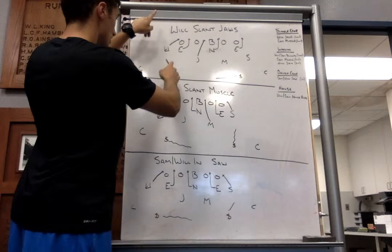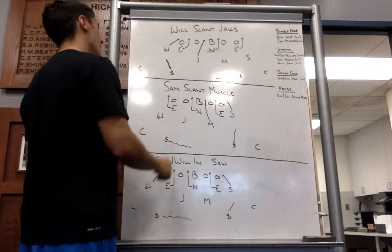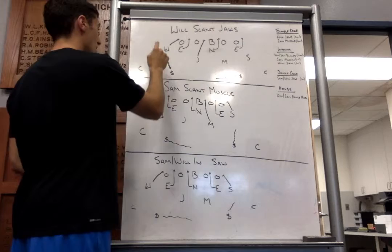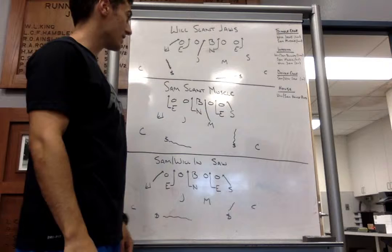We will spin the coverages, we will roll safety down to replace the Will, safety over the top. If this were green, curl flat, deep middle, deep middle, deep middle. If it were gold, man on one, man on two, man on two, man on one, deep middle. That's a single-edge pressure.